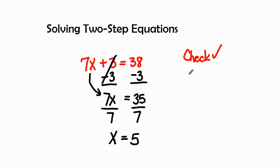So I take 7 times open parentheses, where my variable x is, and I'm going to plug in the 5, plus 3 equals 38.